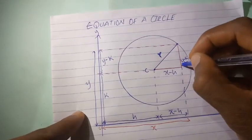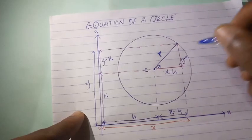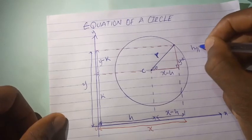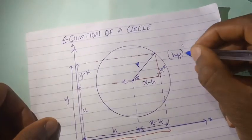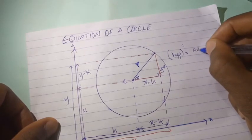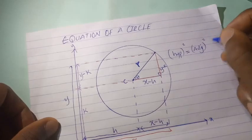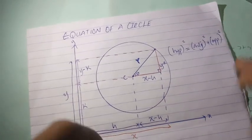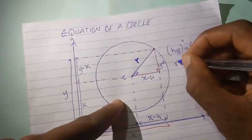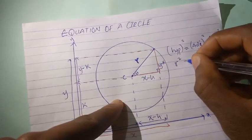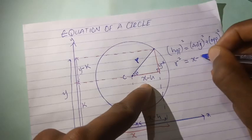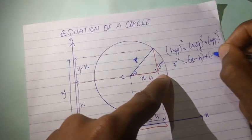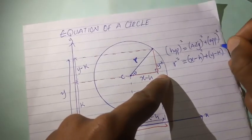If you look at this triangle, it's a right angle triangle. Pythagoras' rule says: hypotenuse squared is equal to the adjacent squared plus the opposite squared. The hypotenuse here is r, so we have r squared equals the adjacent, which is x minus h, squared, plus the opposite, which is y minus k, squared.